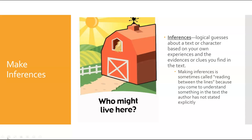Now, making inferences. Inferences are logical guesses about a text or character based on your own experiences and the evidence or clues you find in the text. Making inferences is called 'reading between the lines' because you come to understand something the author has not stated explicitly. So instead of saying 'the animals live in the barn,' they describe hay, feed, and a pasture, and you have to guess who lives there. Look at the image — there's a barn, there's hay, there's a pasture, so there's a good chance there are horses or cows inside. That's an inference.